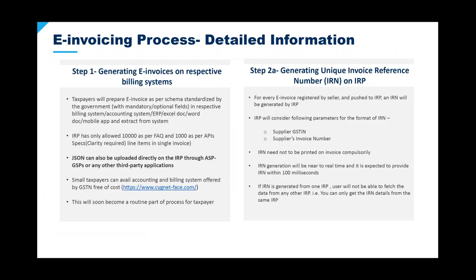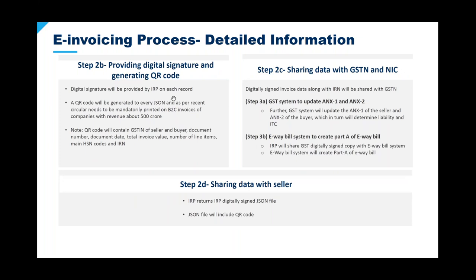Invoices will be prepared per the e-invoicing schema, which has also changed the number of mandatory fields that you will need to check in your source system. Every e-invoice will be sent to the IRP, which will generate an Invoice Reference Number. The IRN considers the supplier's GSTIN and the supplier's invoice number. The IRN may not need to be printed on the invoice, but it must be generated before the invoice is sent onwards. The IRP will provide a digital signature sent back to the taxpayer, which also increases the payload size of each invoice significantly, so your source systems might have trouble storing this data.